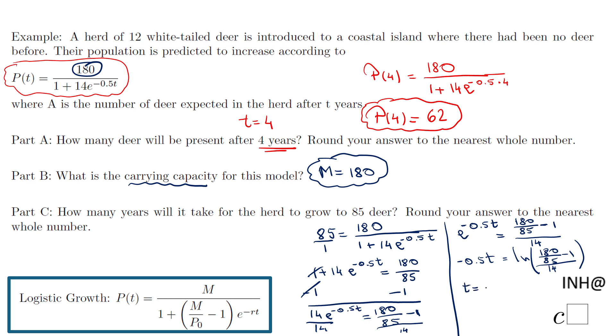I'm going to say it like this: negative 0.5t. You see, I multiply by negative 1 over 0.5 both sides, and take the natural log of this expression: 180 over 85 minus 1, over 14. So be careful, this long expression is a natural log. That's probably the first thing I will do.